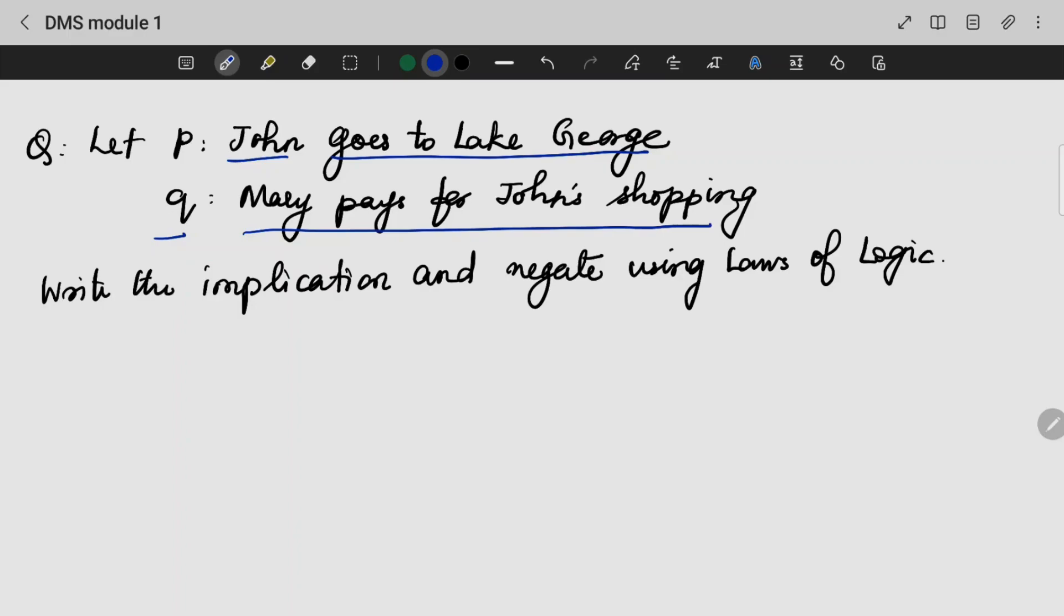This is just for understanding purposes. Let P be John goes to Lake George and Q is Mary pays for John's shopping. If it is an implication, if John goes to Lake George, then Mary will pay for John's shopping. So, we can actually write the equivalent of that as not P OR Q.